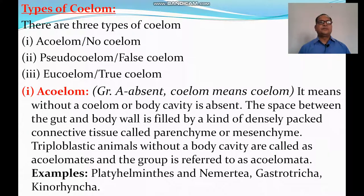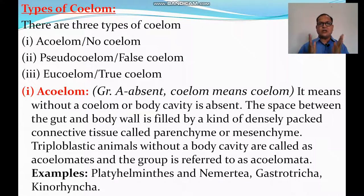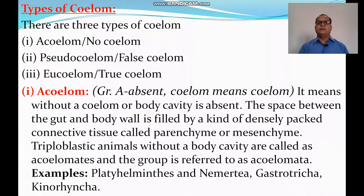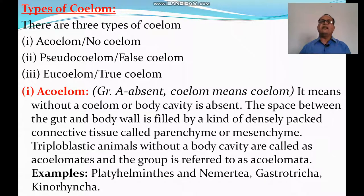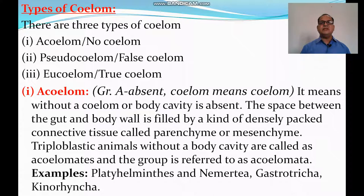Types of Coelom. There are three types of Coelom: Acoelomate animals, Pseudocoelomate animals, and True Coelomate animals. First, Acoelomate animals. In triploblastic animals, 'a' means absent and 'coelom' means body cavity. Those triploblastic animals in which mesoderm is present but coelom is not present — body cavity is not found. The space between gut and body wall is filled by packed connective tissue, parenchyma, or mesenchyma tissues, but not by a cavity. Triploblastic animals without a cavity are called Acoelomate and the group is referred to as Acoelomata.